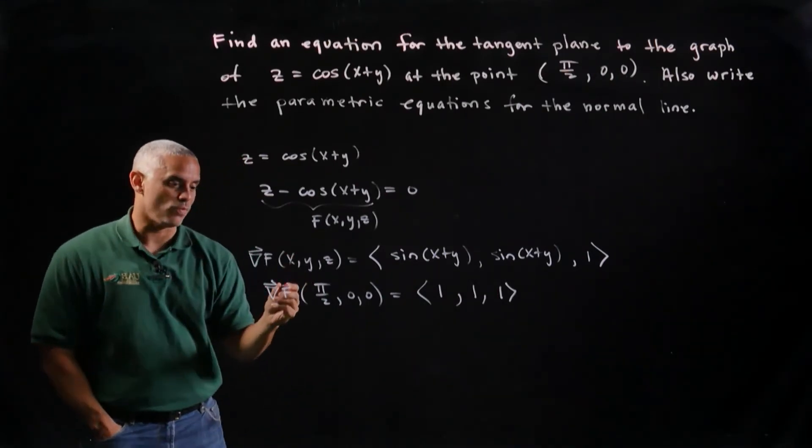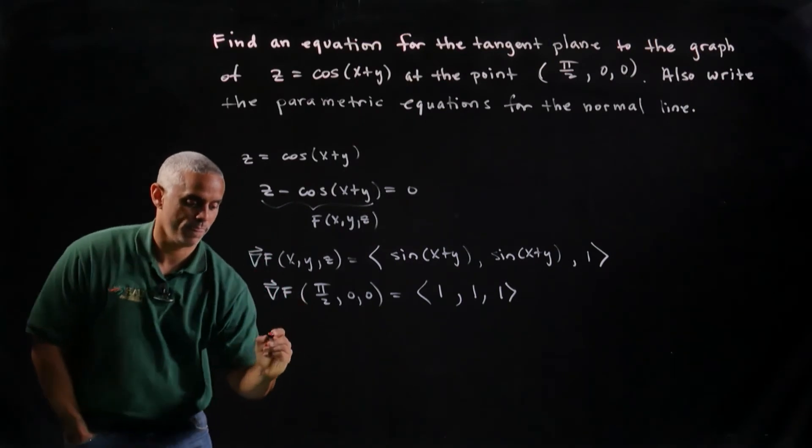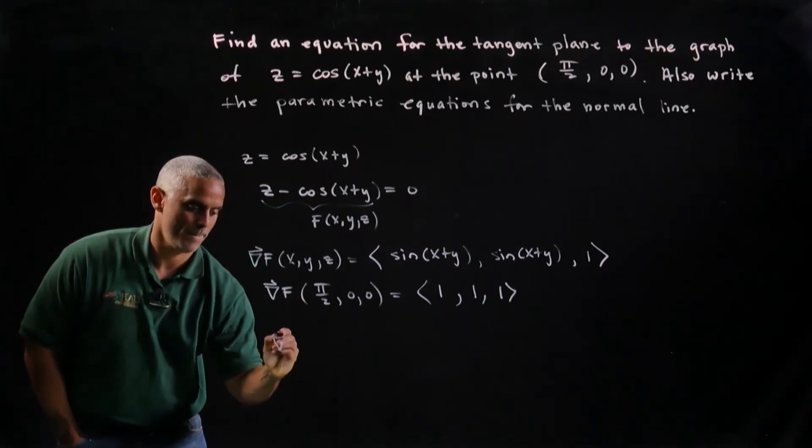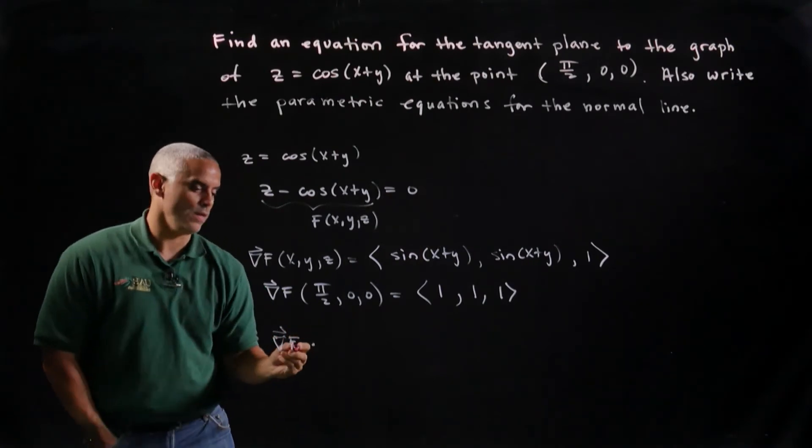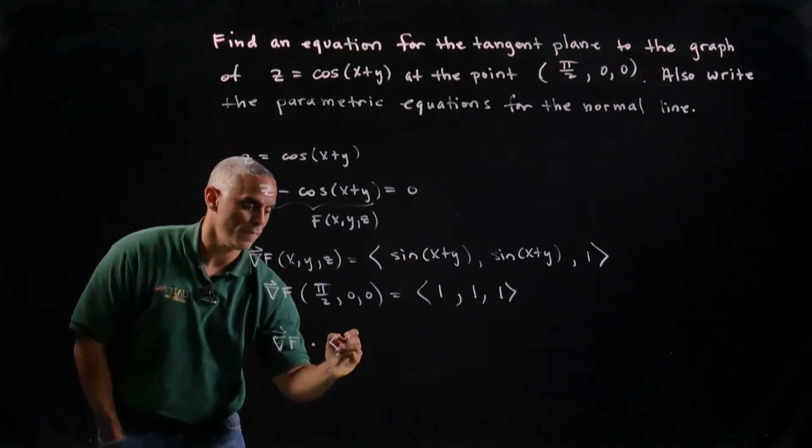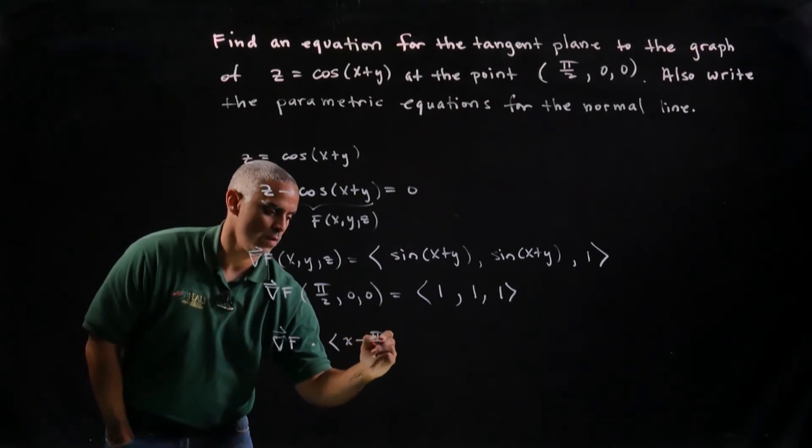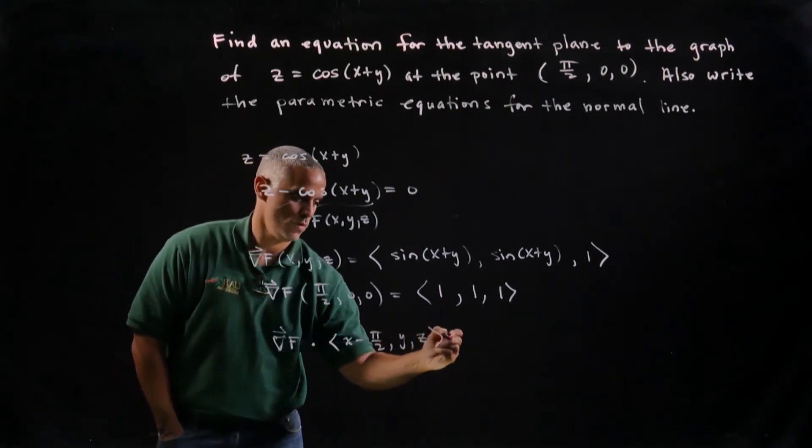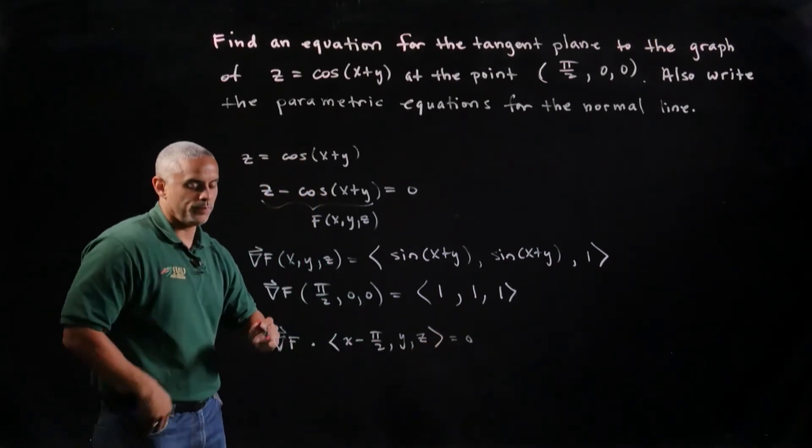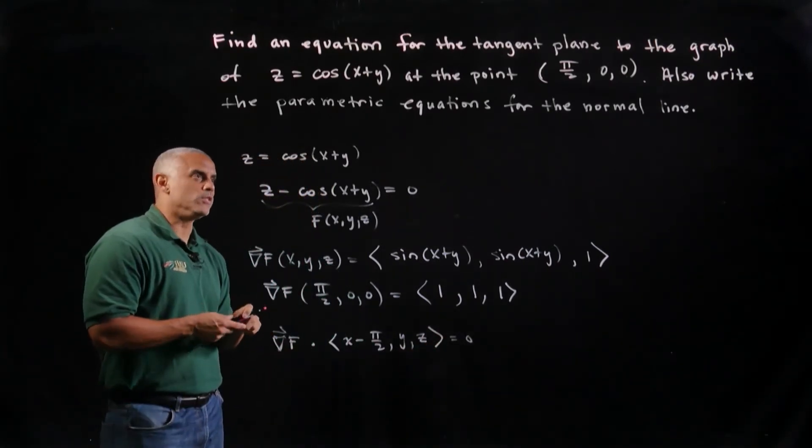So the equation of a tangent plane, I'll just write as the gradient of f at my point p, dotted with the vector x minus pi over 2, y minus 0, z minus 0, and of course the dot product must be 0.